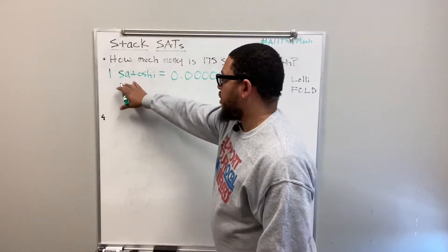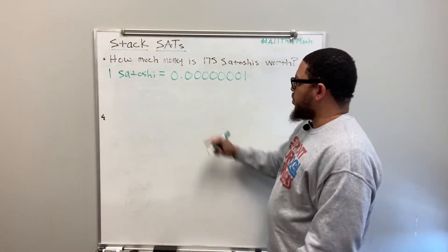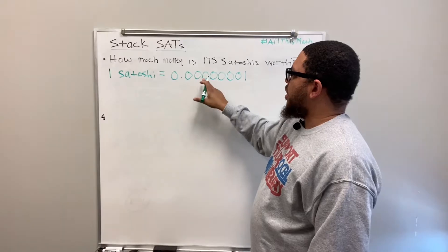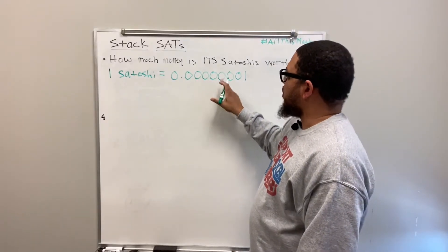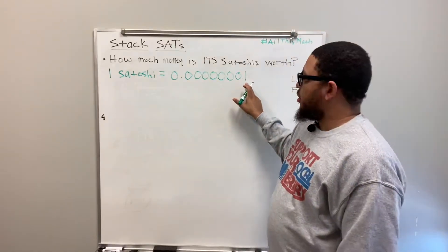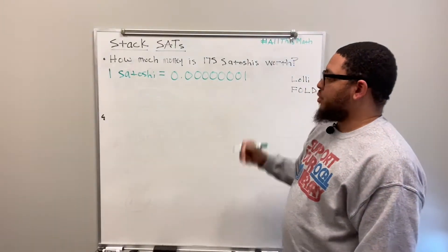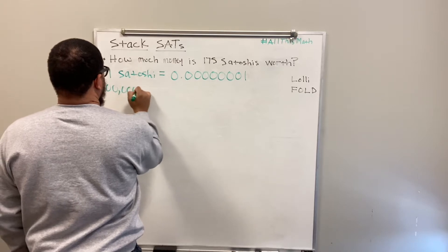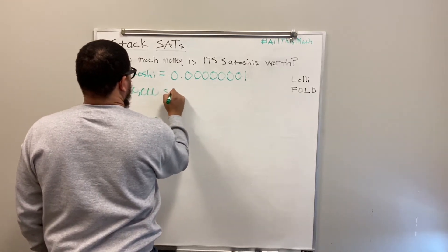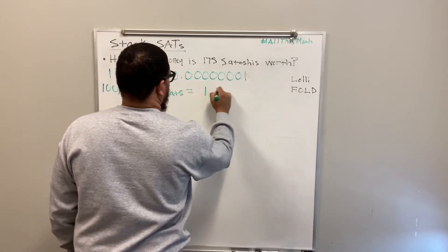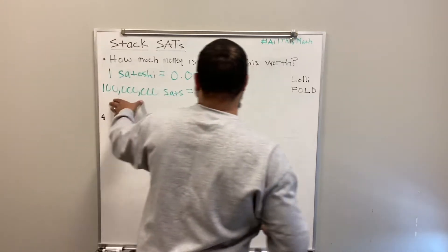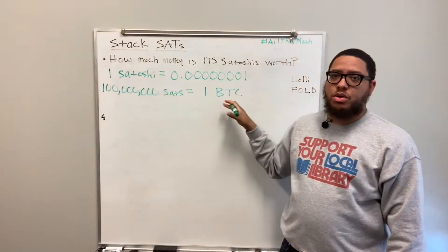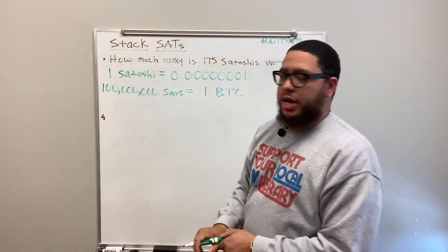One satoshi is worth one hundred-millionth of one Bitcoin. Thinking about place value — that's the tenths, hundredths, thousandths, ten-thousandths, hundred-thousandths, millionths, ten-millionths, hundred-millionths place. Conversely, 100 million satoshis is equal to one Bitcoin (BTC). It works both ways.